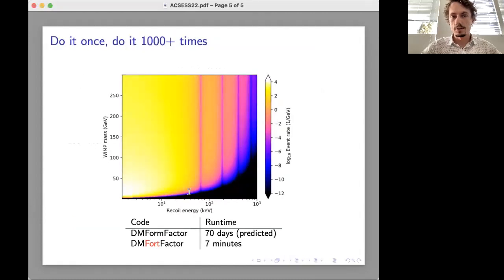My much faster code will enable us to do things that would have been impractical before. For example, the simple heat plot shows event rate calculations for a range of different masses of a dark matter particle. Using the existing code this would have taken about 70 days to generate. With the new code it takes only seven minutes.